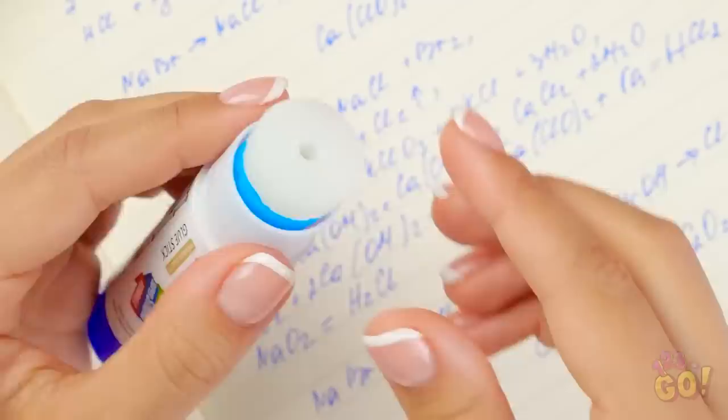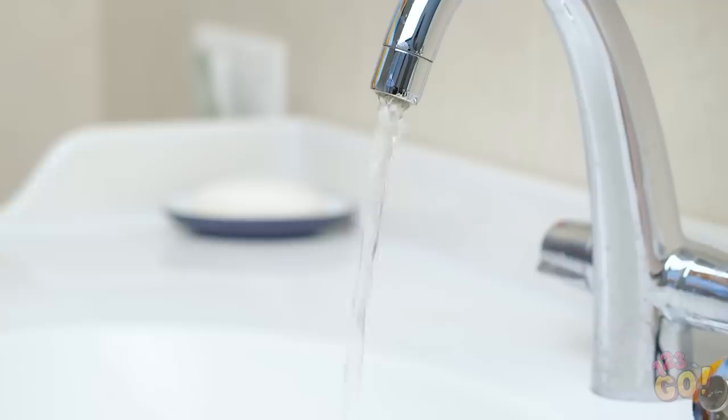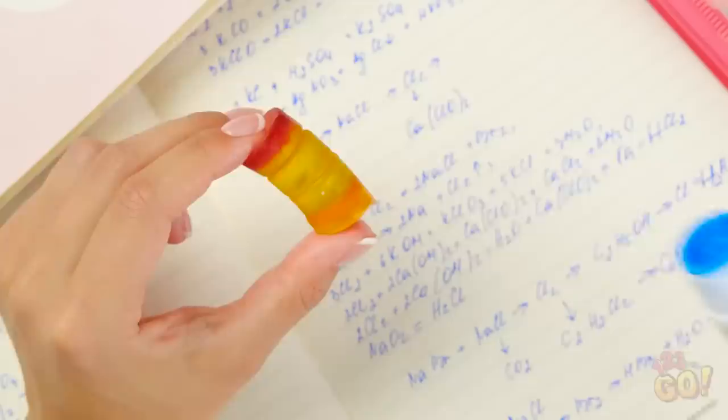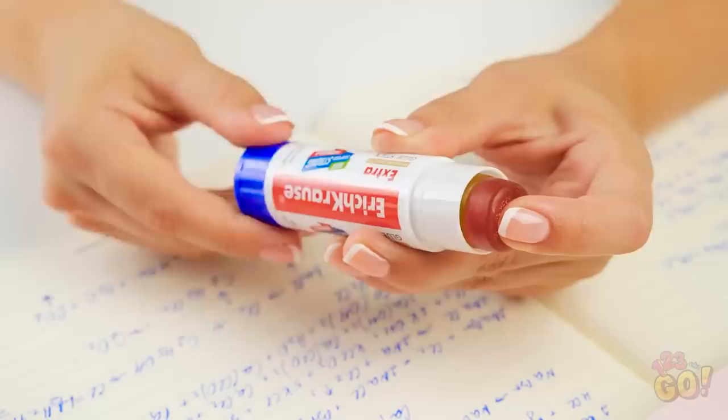If you have to hide snacks in class, use an empty glue stick case. The most important part? Take out the glue. You don't want to eat that. Don't forget the bottom piece! Make sure to rinse out the glue casing to get any lingering chemicals out of there. Now comes the fun part! Take some of your favorite candy, like these gummies here, out in a stack to stick in the tube. Now watch as they slide right in there! Perfect fit!